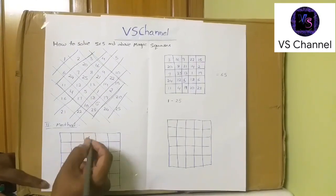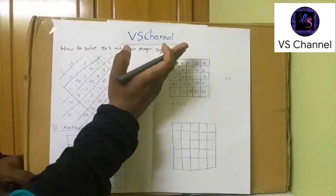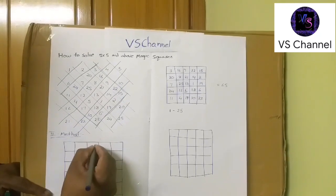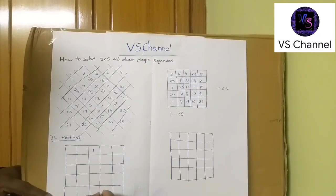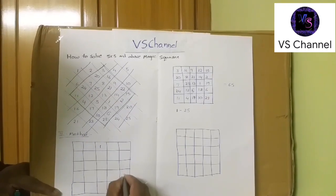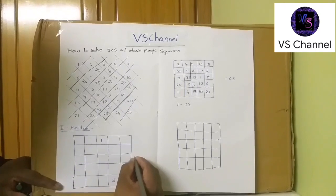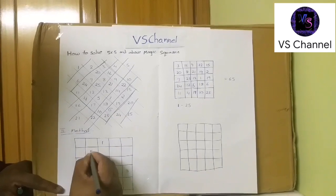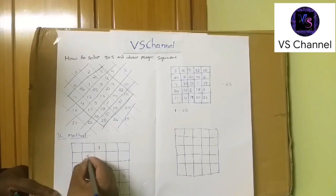So after this, we go diagonally towards right hand side like this. So that means we can move like this. So here we need to write 2. But we don't have a cell, so we come to bottom of this column. 2, then 3. Now we come out of the square, 4. So in this row we can represent 4 in this row. 5, 6 we need to represent. It is already filled, so we can represent 6 below the 5th cell.